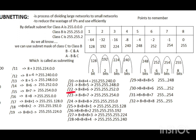Slash 22 is 8 plus 8 plus 6 bits. First octet 255, second octet 255, third octet 6 bits gives 252. So slash 22 is 255.255.252.0. Slash 23 is 8 plus 8 plus 7 bits. Third octet 7 bits gives 254. So slash 23 is 255.255.254.0. Slash 24 is 8 plus 8 plus 8 bits. All three octets are 255. So slash 24 is 255.255.255.0.